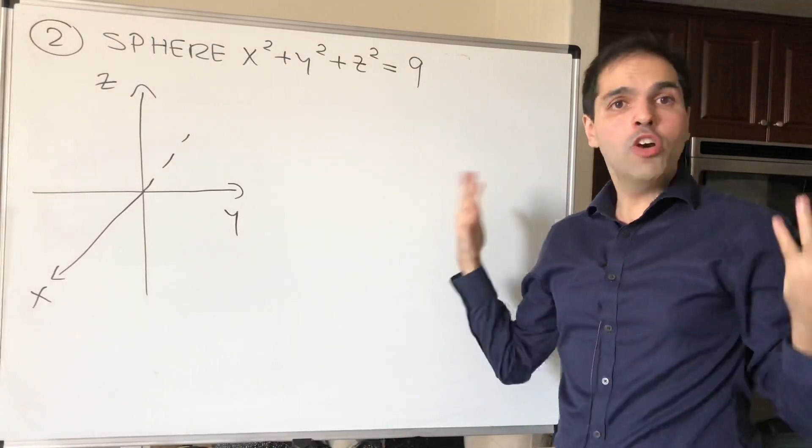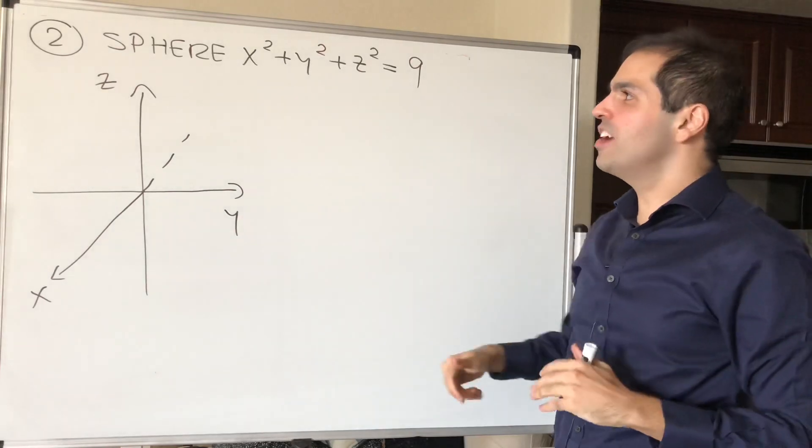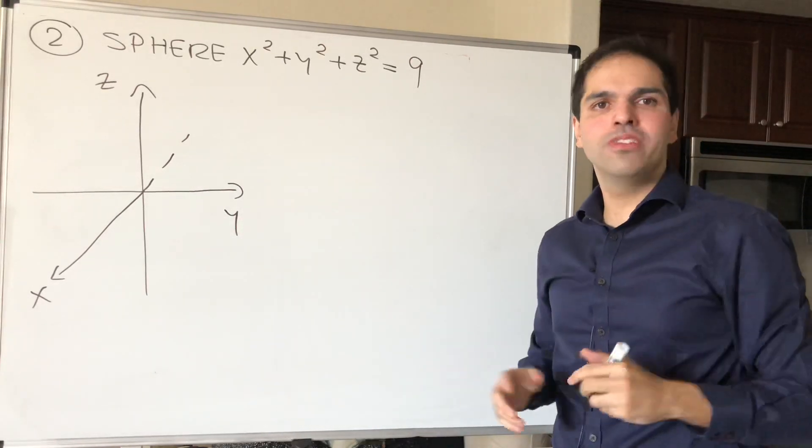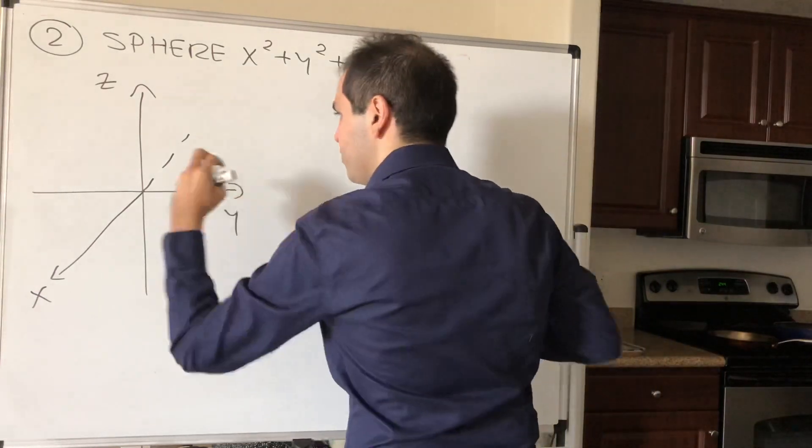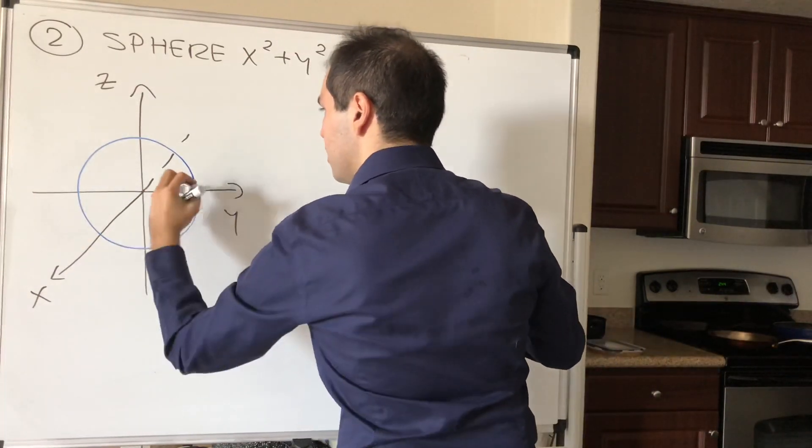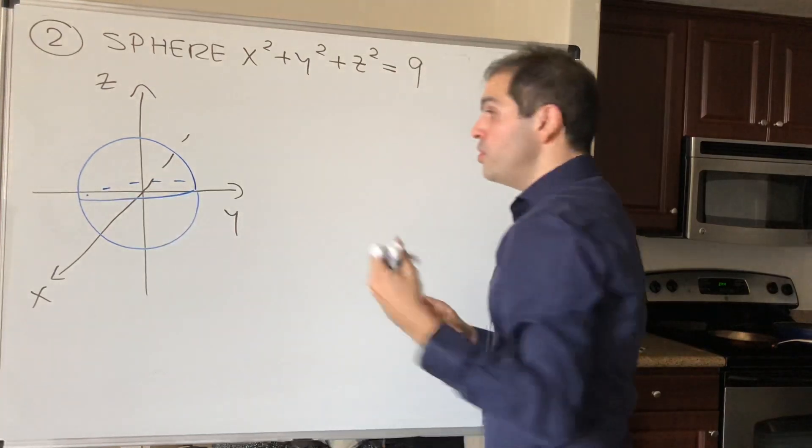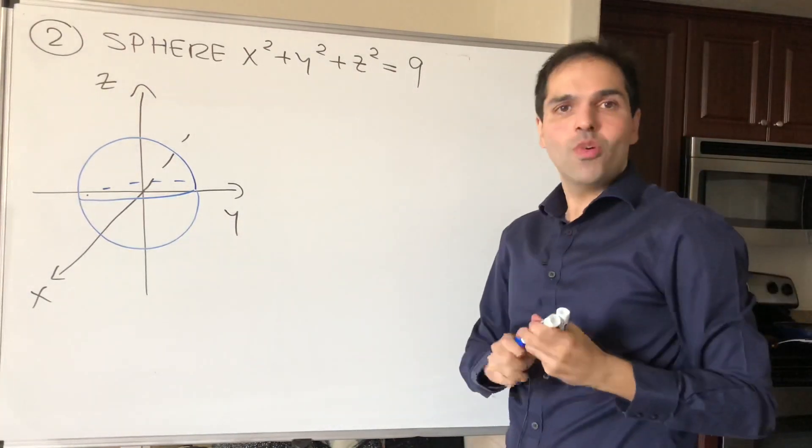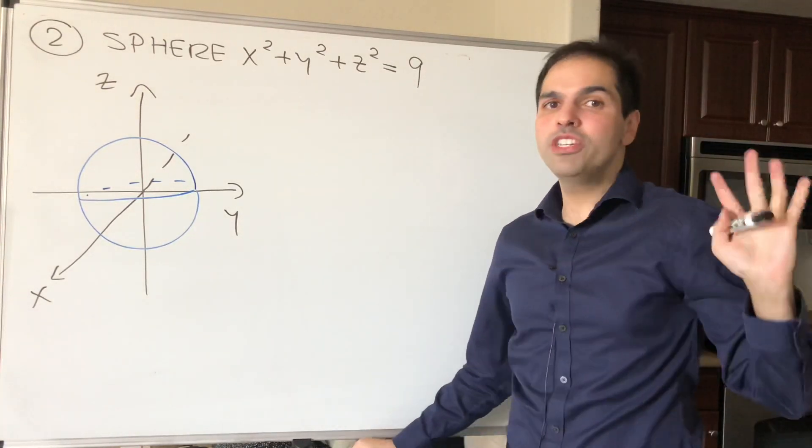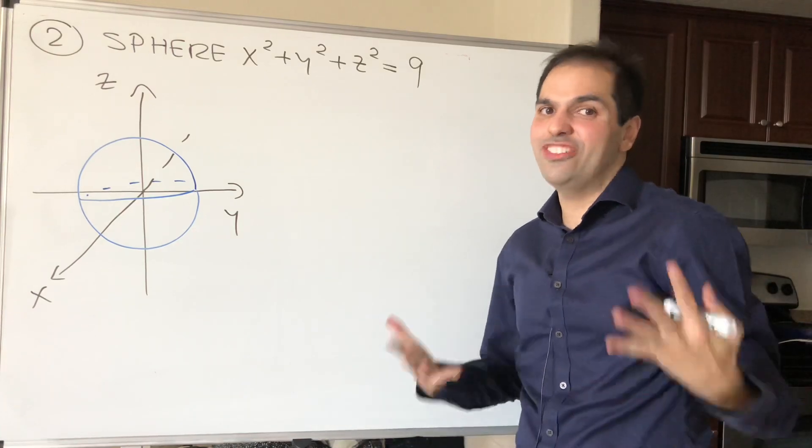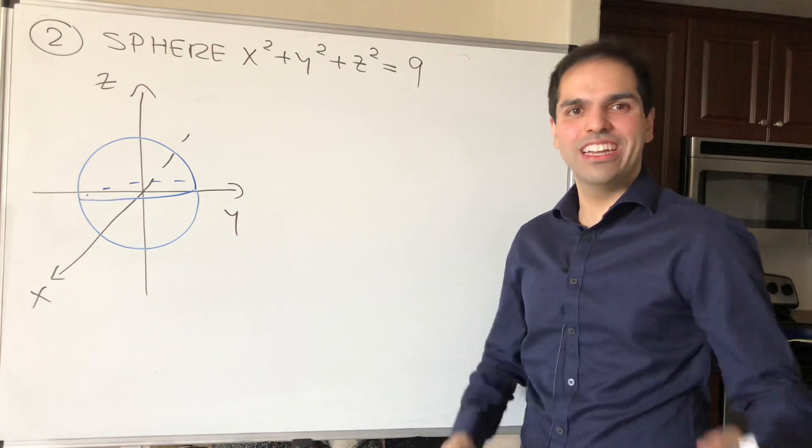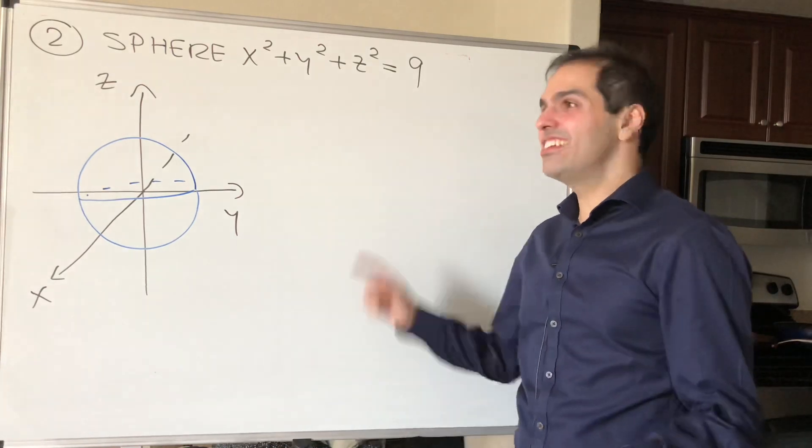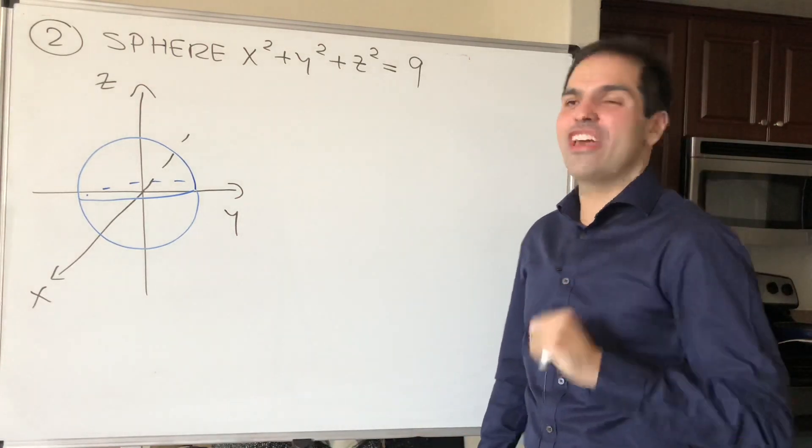Next example, how about representing the sphere, x squared plus y squared plus z squared equals 9, again, which looks something like that. This beautiful round sphere. And the question is, how would we usually represent the sphere? Well, spherical coordinates. If you thought the same thing, then I have to say it's very good.